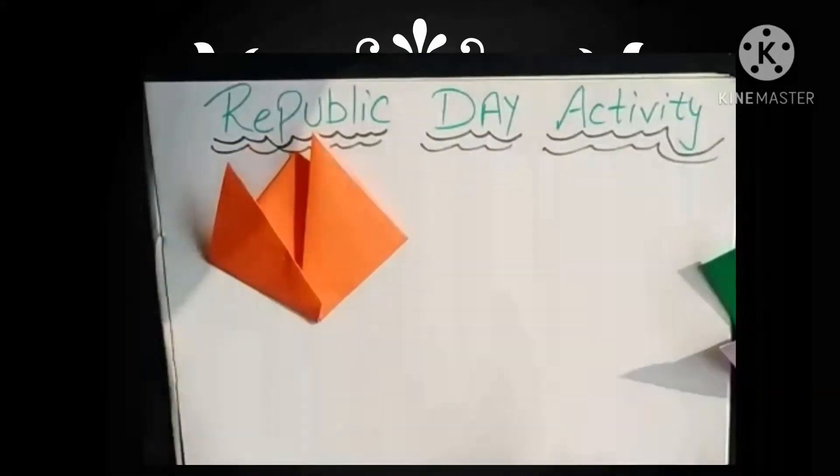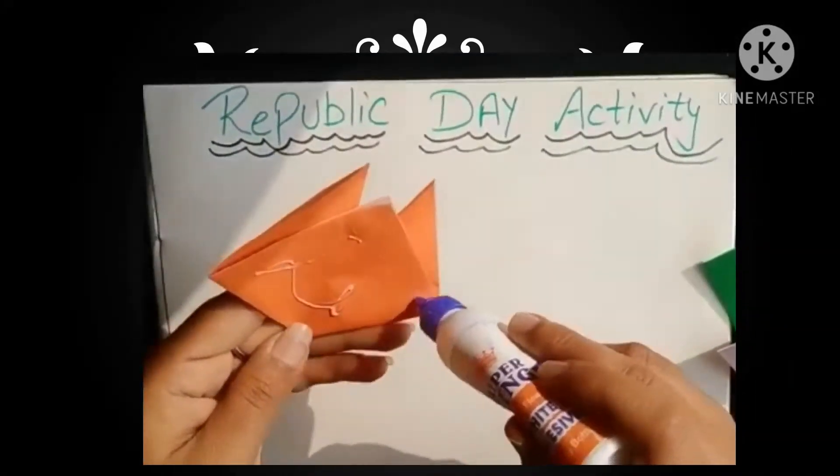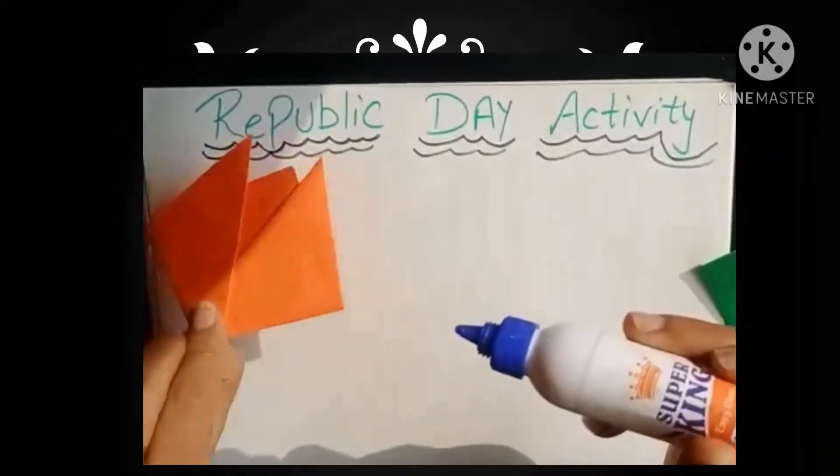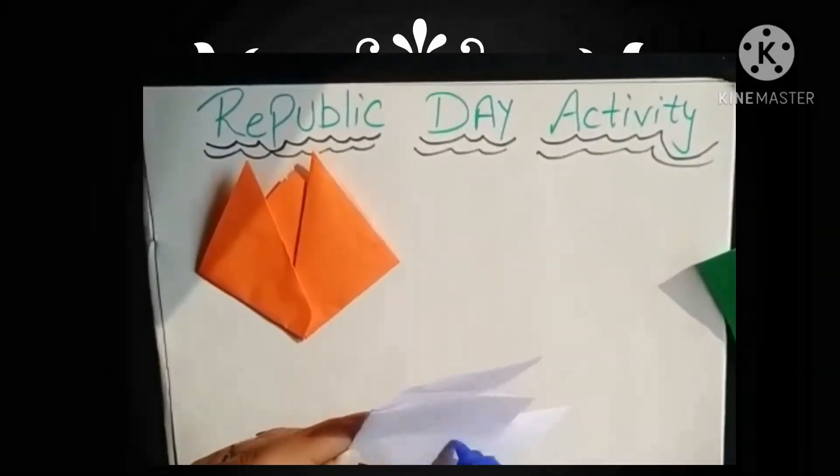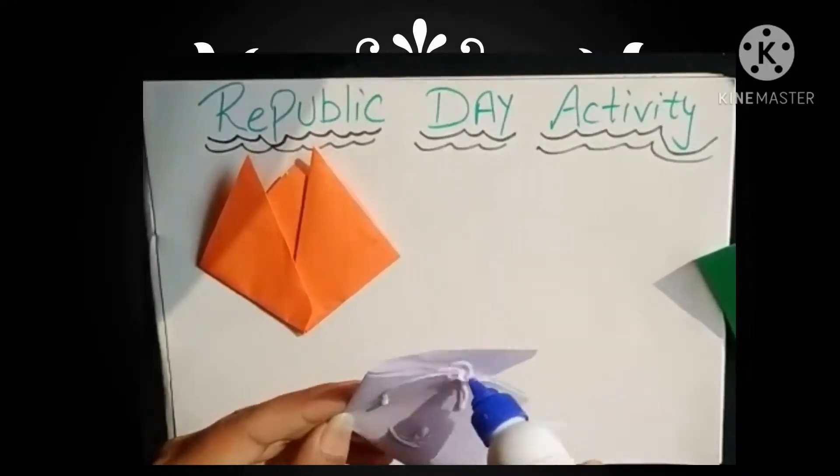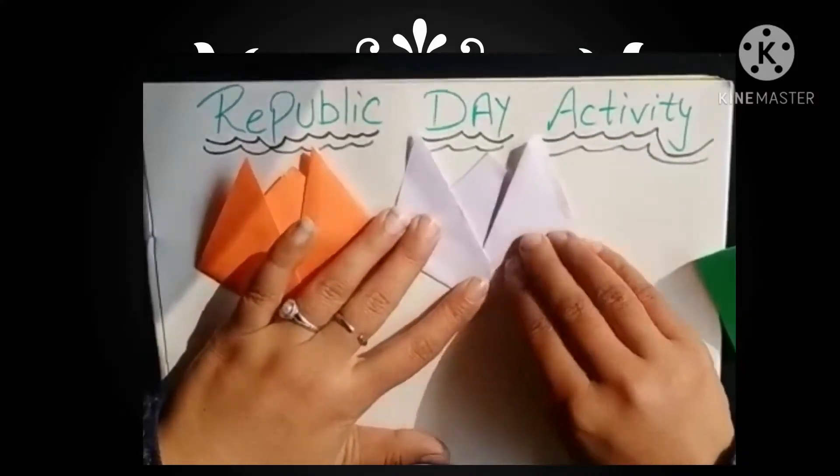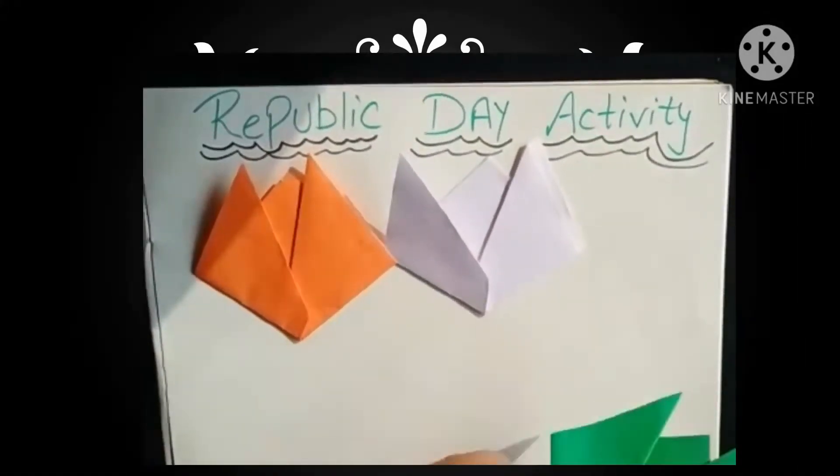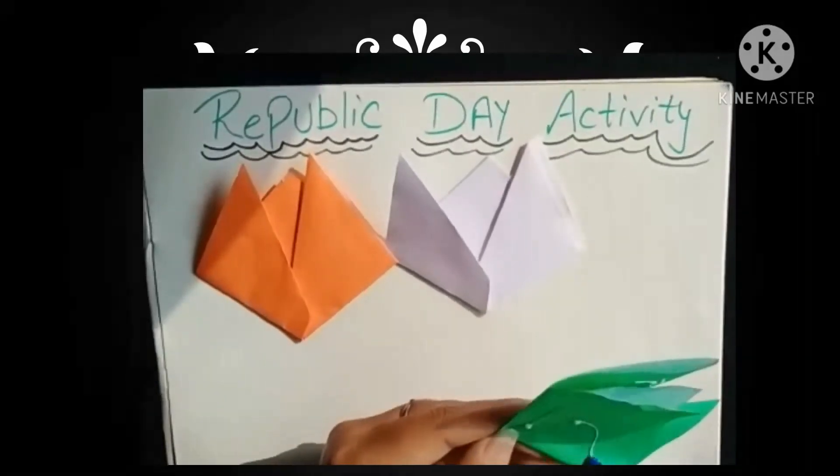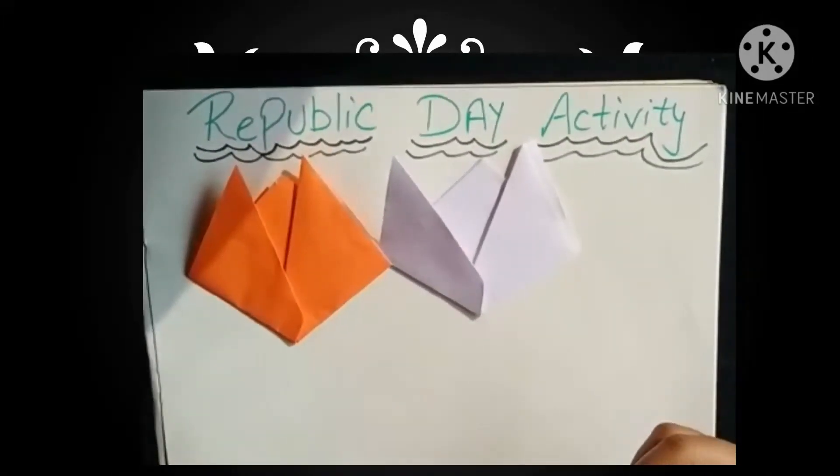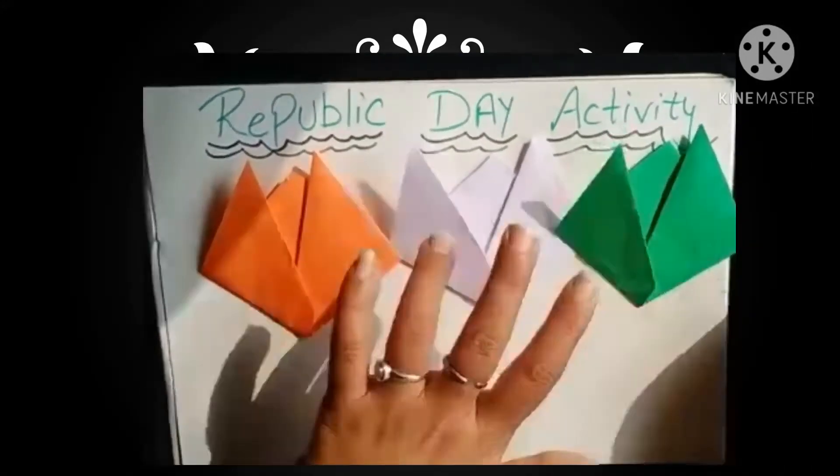Now we need to paste the colors. We should put it flip back through here. Next, you need to add color on this corner. Paste it here. Now we will paste it here and paste it here and paste it here.